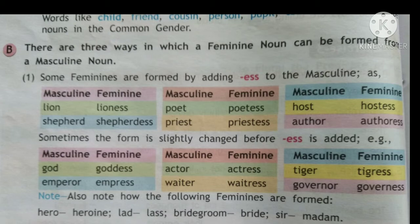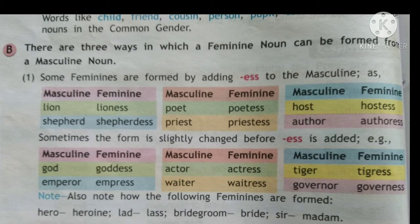So if any one of the nouns is given, how can we form another gender? The first way: some feminines are formed by adding -ESS to the masculine. For example, lion — L-I-O-N — if we add -ESS after that N, it becomes lioness. Shepherd becomes shepherdess. Poet becomes poetess. Priest becomes priestess. Host becomes hostess. And author becomes authoress.